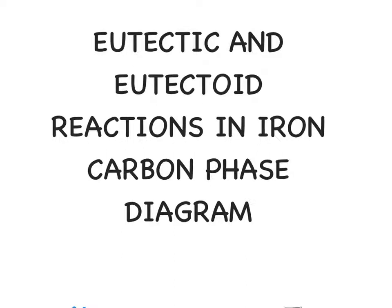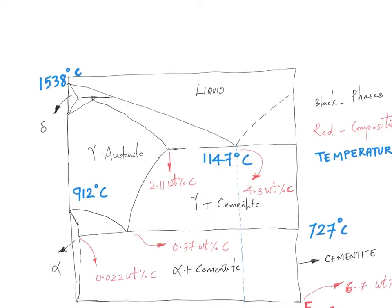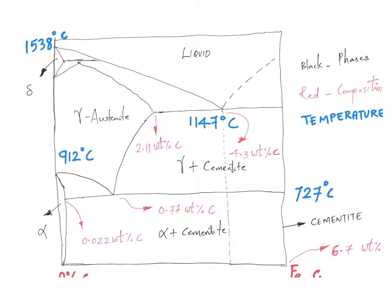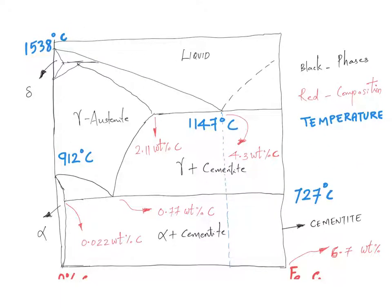Hi friends, welcome back. In this video, we are going to look at the eutectic and eutectoid reactions in iron-carbon phase diagram. I already explained where the eutectic point is in an iron-carbon diagram. The eutectic point is at this point, and I explained why it is the eutectic point. Keep in mind, eutectic means easy to melt.